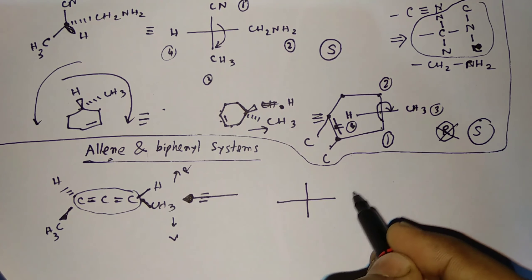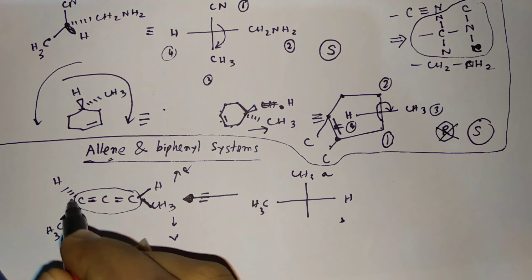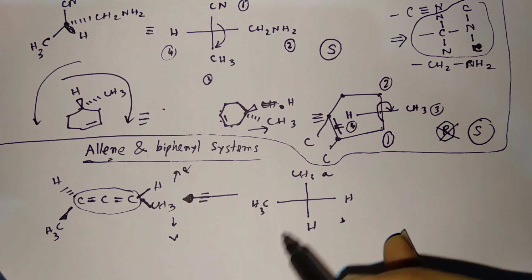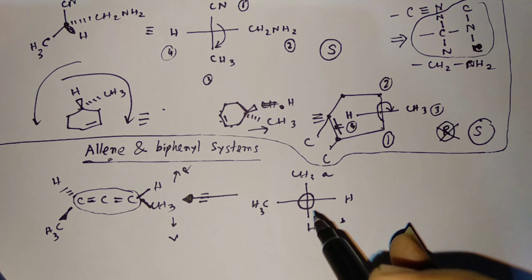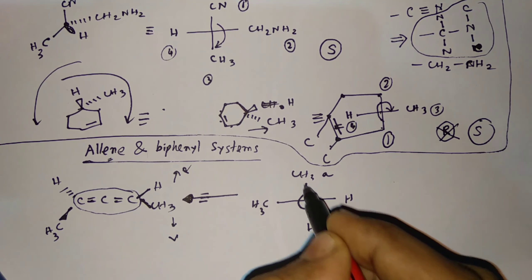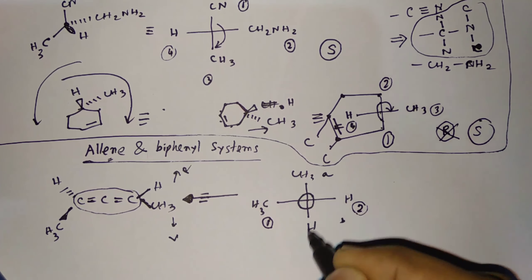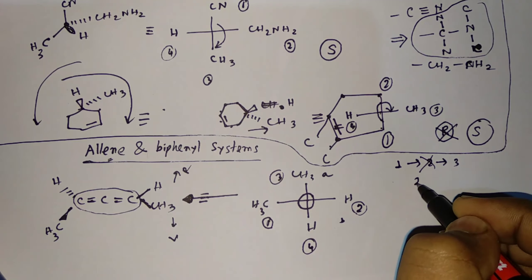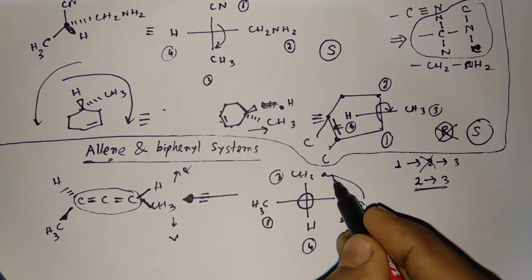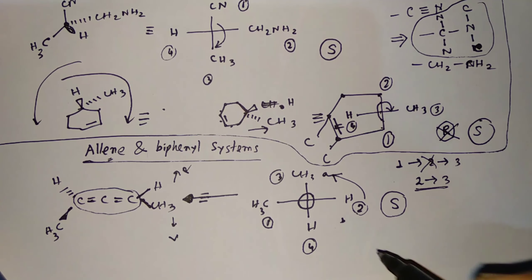The rule is that you have to look at the system from the direction in which the two groups attached to the main carbon are on the same plane — above and below. If you look from that direction, this will be right and this will be left. So draw the Fischer projection: right group is hydrogen, left group is methyl. From above the group is CHT, and below is H. For numbering, first consider the horizontal line. Between the two groups, this will be priority 1 and this will be priority 2. Next, consider the vertical line — this is priority 3 and this is 4. Going 2 to 3, it is anticlockwise, so it is S. No condition about horizontal or vertical line applies here — just anticlockwise is S, clockwise is R.